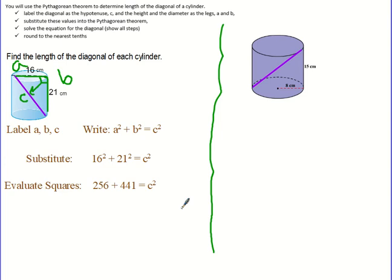Now I'm going to add together those two values. 256 plus 441. I get 697 equals C squared.